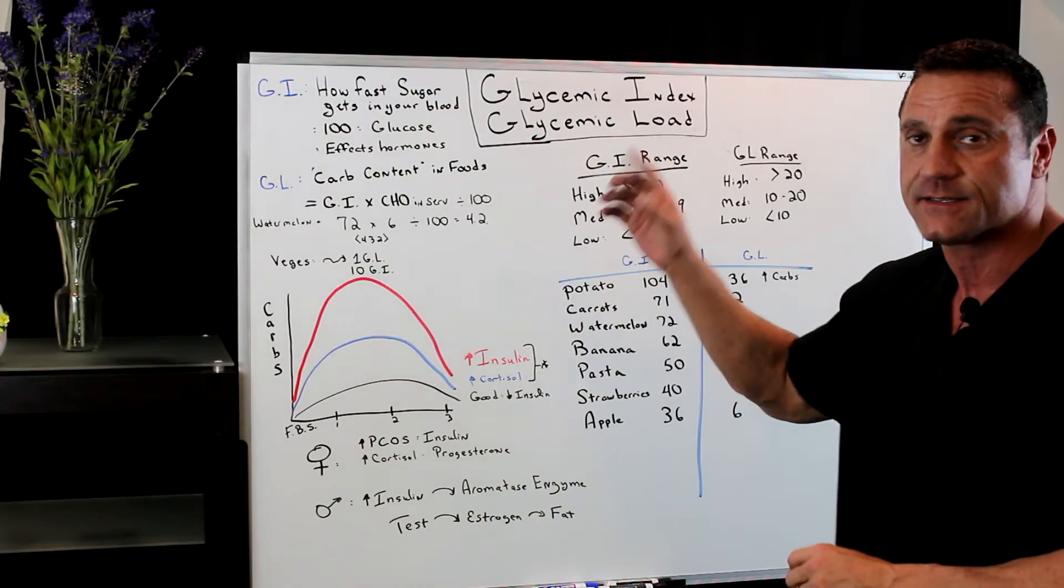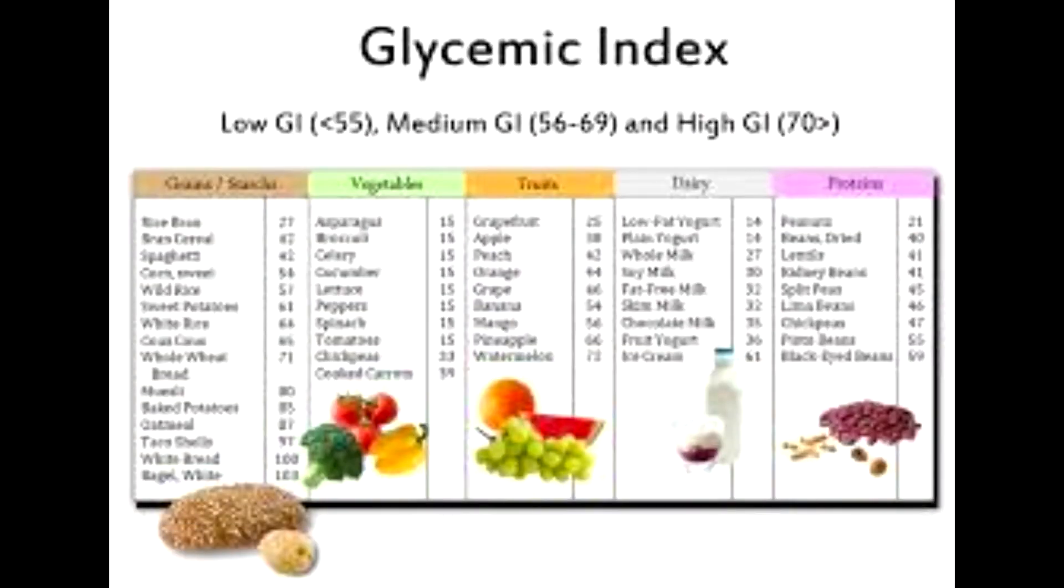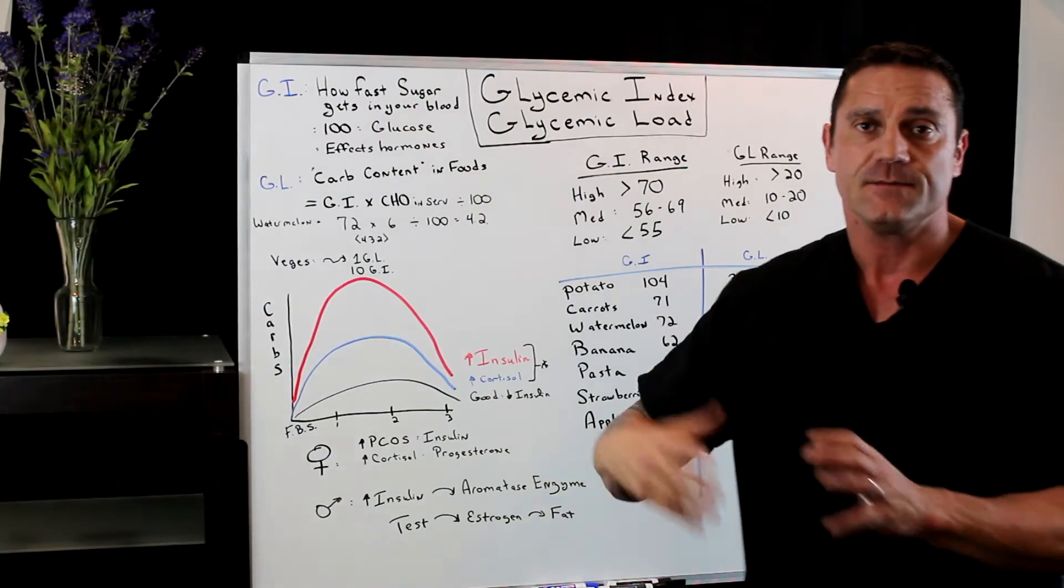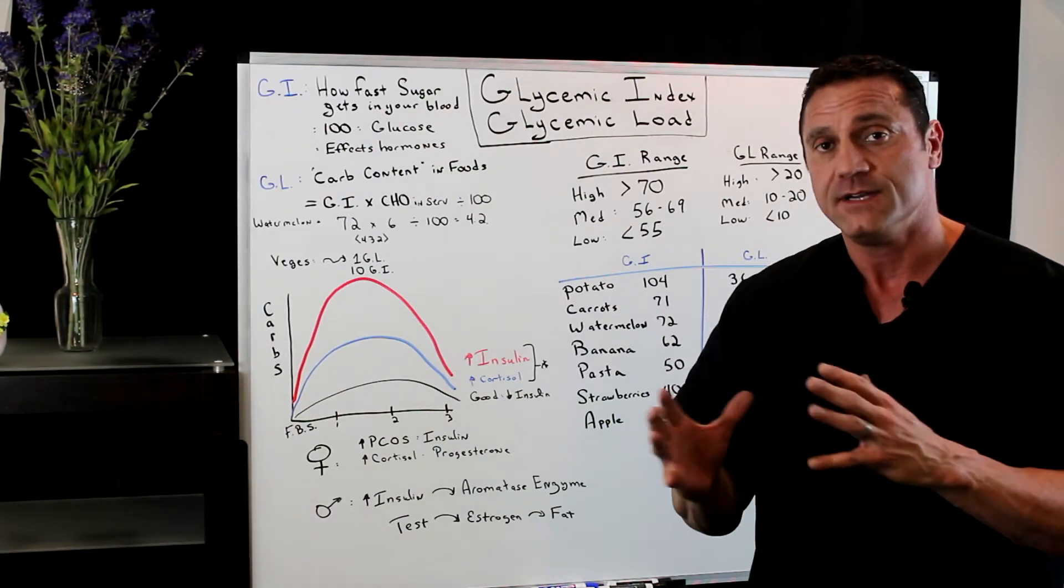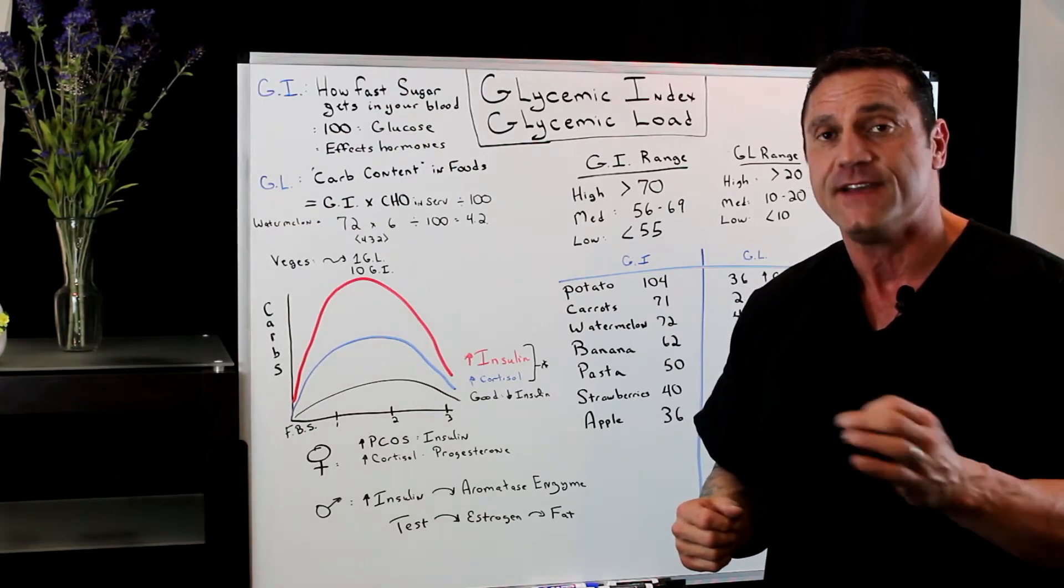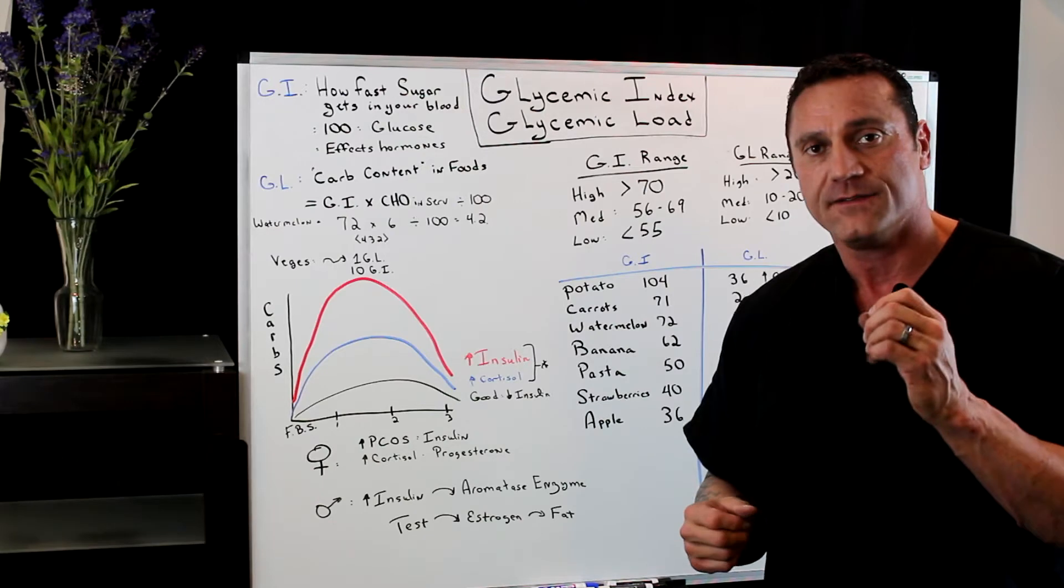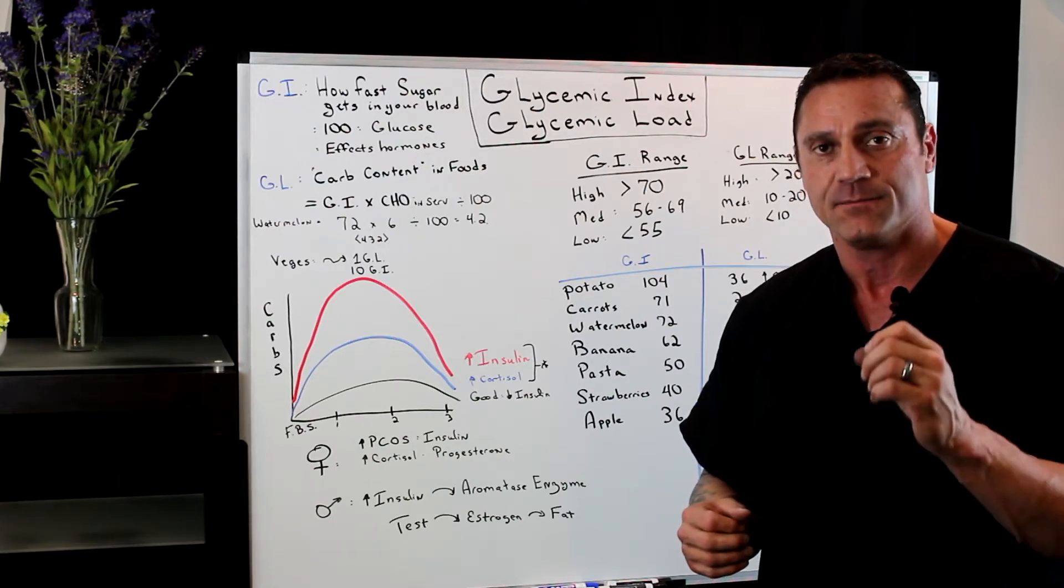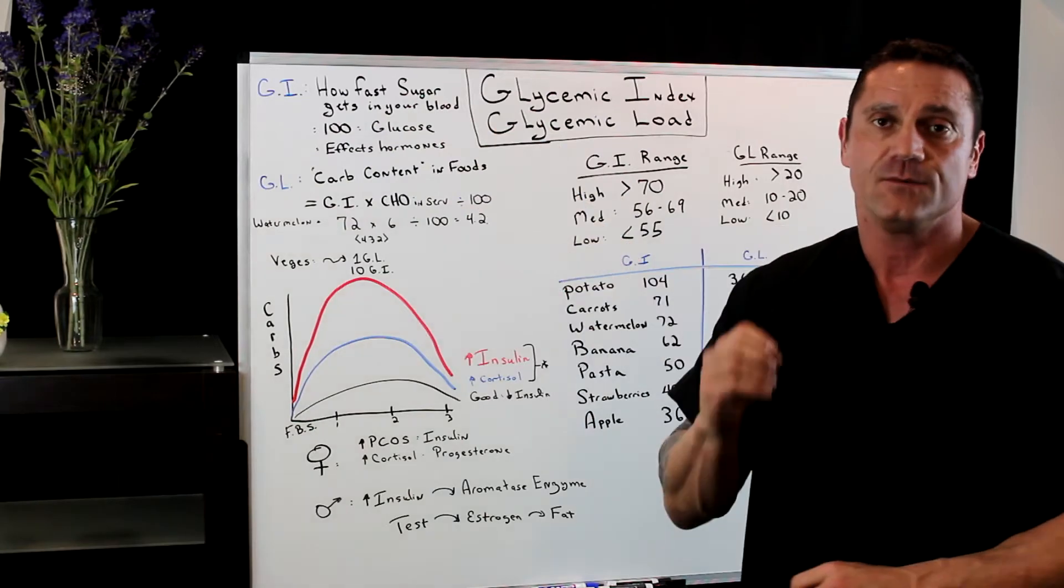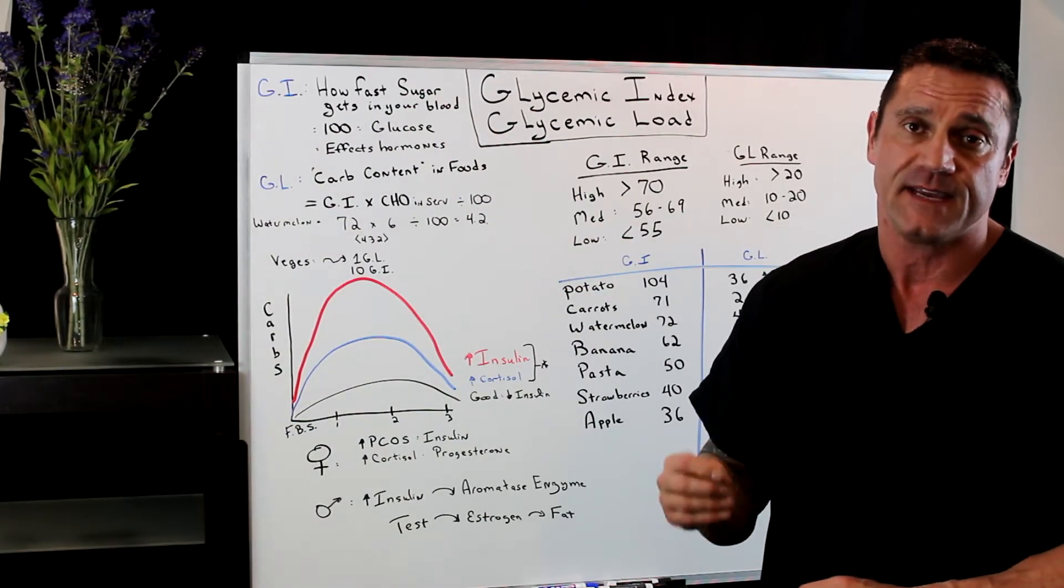One is the glycemic index. The glycemic index measures how fast does the sugar get into your bloodstream. They took a measurement of someone who did fasting for 24 hours and they introduced food items individually to measure how much of that glucose elevates in their bloodstream. You're looking at 100. That was the measure.